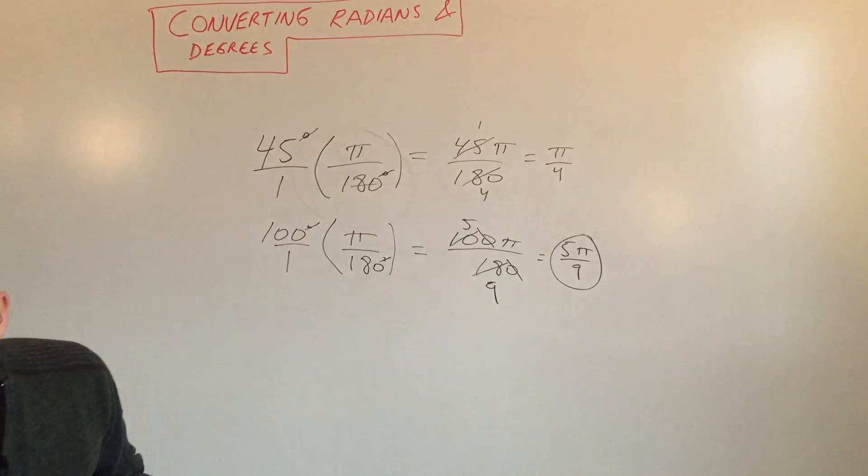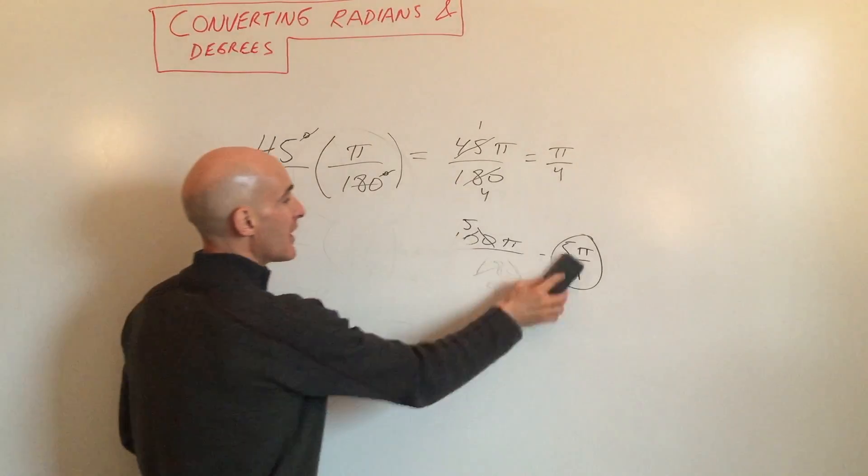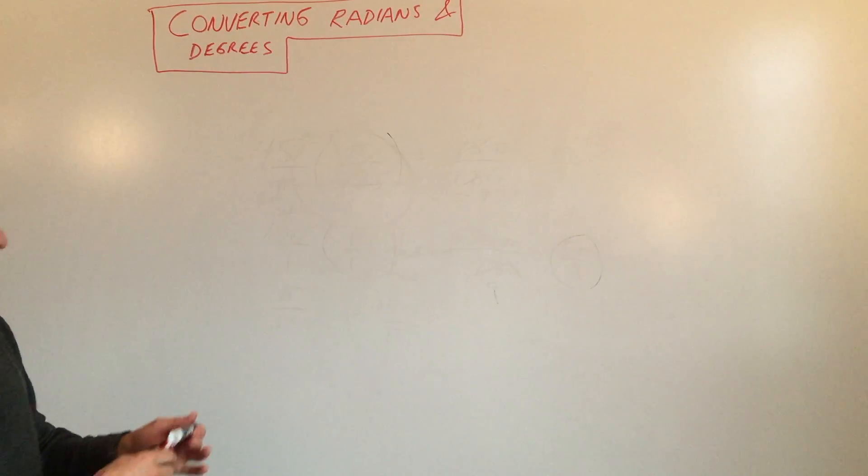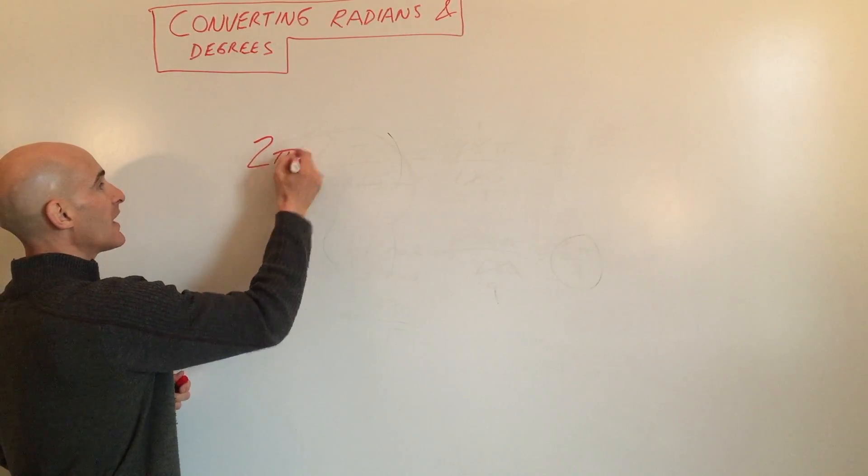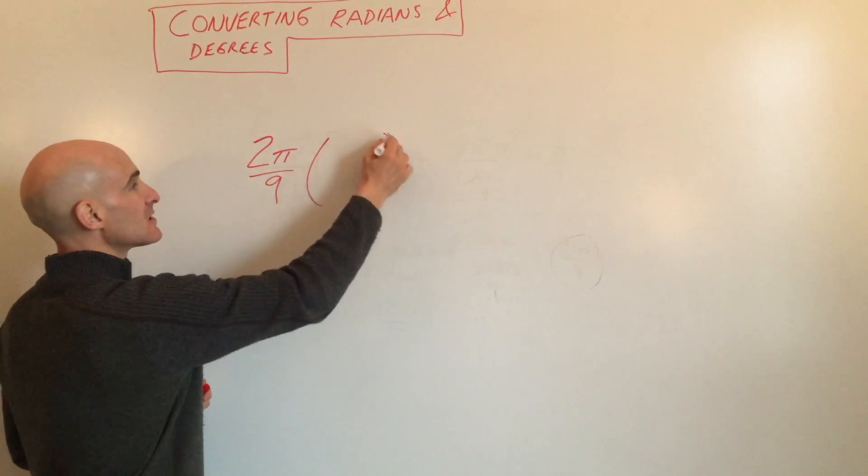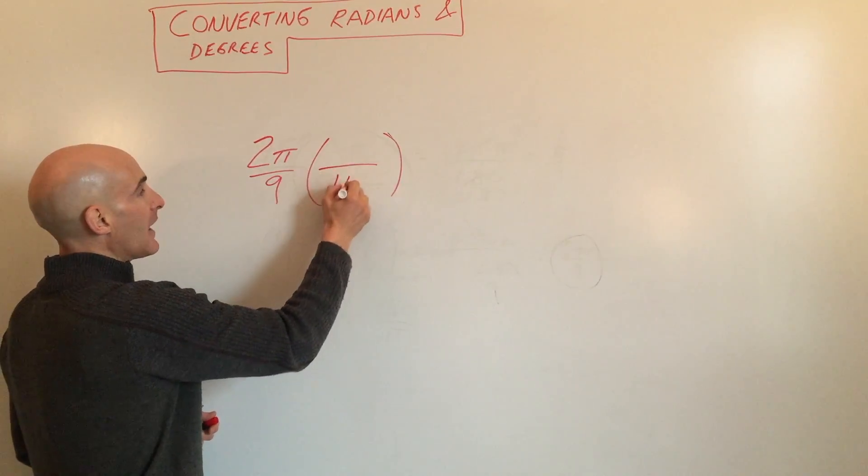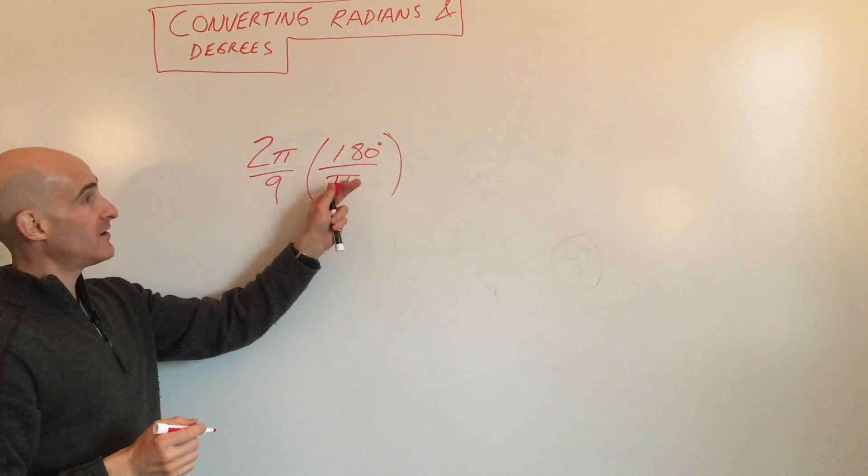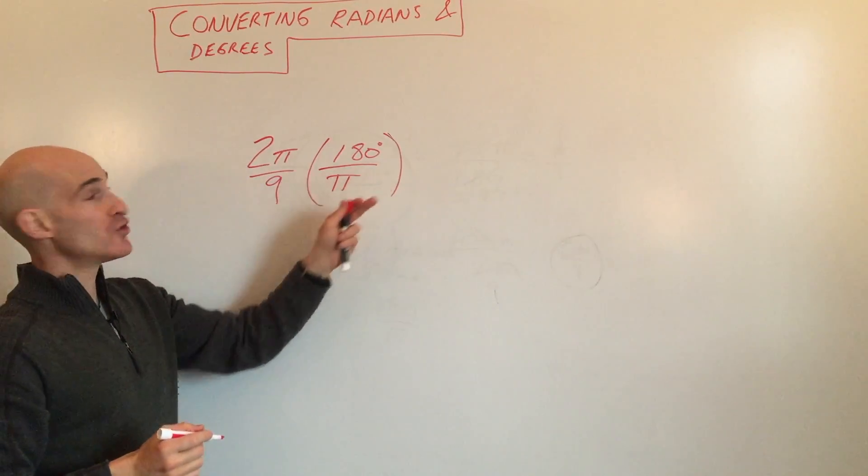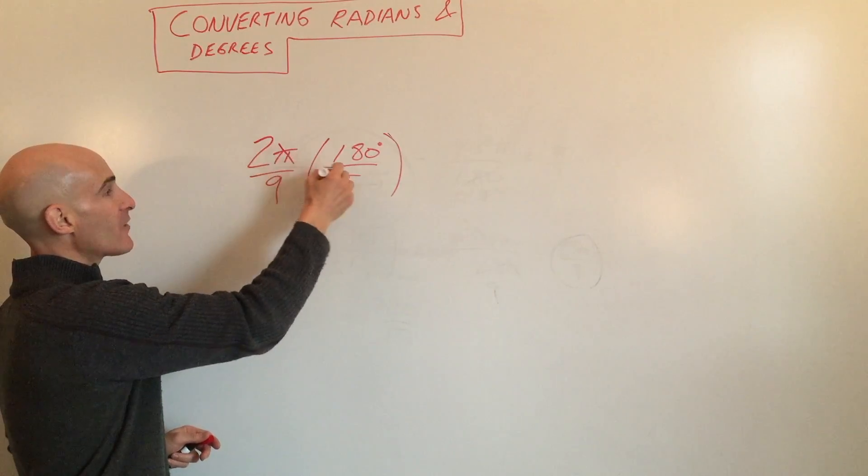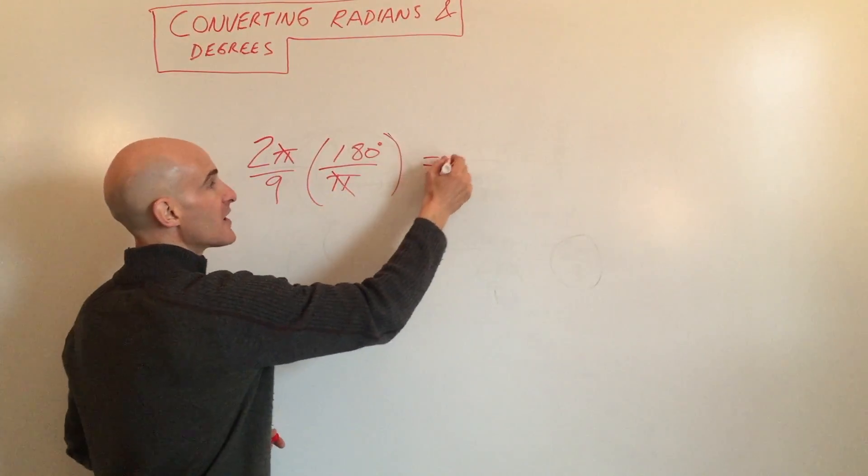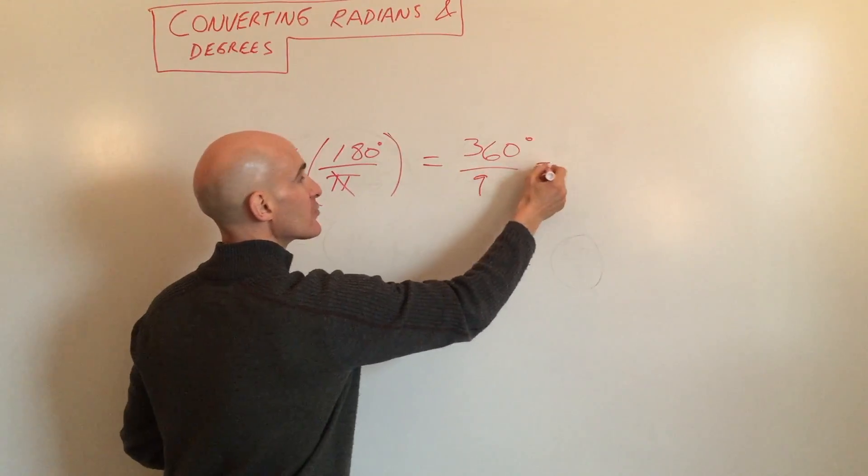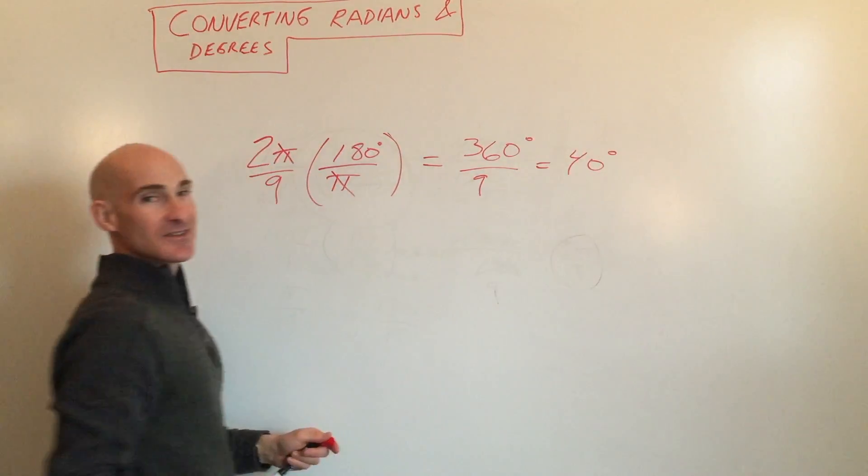Now let's do some examples where you're converting from radians back to degrees. Say you have 2π/9 radians. We're going to multiply by 180 over π. The π radians cancel out. Multiply across numerator and denominator to get 360 divided by 9, which is in degrees. If you reduce further, you get 40 degrees.